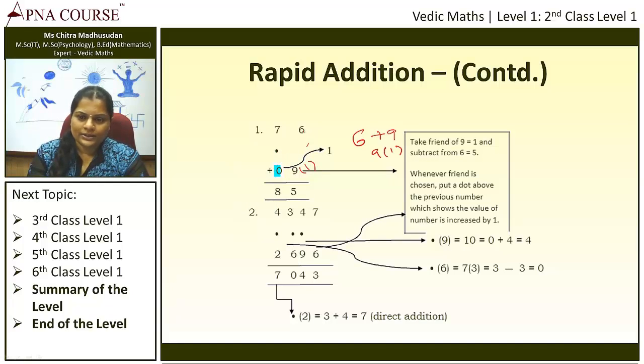And 6 minus 1 is 5. Whenever friend is chosen, you should subtract from the number. So 6 minus 1 is equal to 5, and 7 plus 1 since 0 will become 1, so 7 plus 1 becomes 8. So 76 plus 9 is 85. We will see one more example.